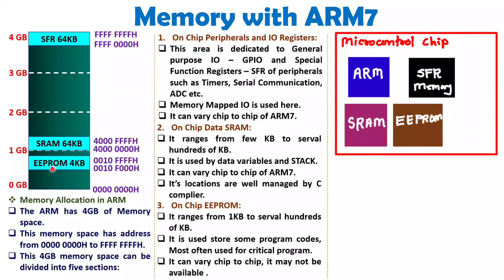The third section is on-chip EEPROM. This is also on-chip and ranges from 1 KB to several hundreds of KB, based purely on the need of the application. It is not compulsory that EEPROM will always be present with an ARM7 TDMI chip — it may not be available. But if you are working with some critical program, this memory will be available. Here I have shown 4 KB of EEPROM, and it is specially used to store some critical programs.